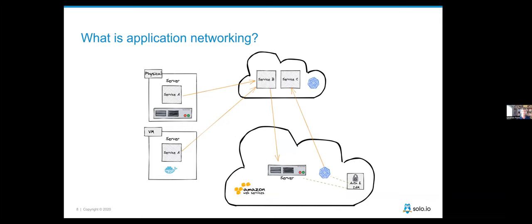Most organizations are looking at a multi-data-center, multi-cloud, multi-home solution. They may have existing data centers, VM deployments, or physical servers, and they're exploring Docker and Kubernetes — or they've already adopted them, in private or public clouds. They need consistency in their security policies, resilience policies, and application behavior. How these things connect is extremely important to that.